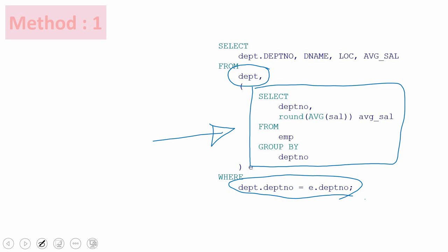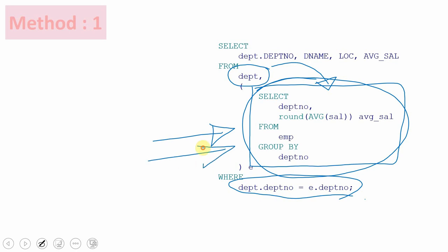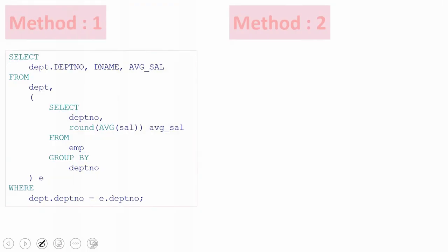This is our first method of implementation. The key thing here is that the inner query computes the department-wise average salary, and the outer query selects department name joined via an inner join. The key limitation is that the inner query cannot access any column from the outer table — meaning we cannot access the department table's columns within the inline view.